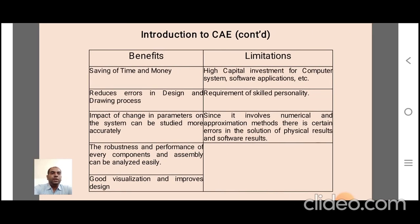Here are some benefits and limitations of Computer Aided Engineering. The first benefit is saving of time and money — with computers implemented, there is considerable time and money saving. The next benefit is reduction of errors in the design and drawing process. When drawing or designing any component, personal errors are introduced, and if that drawing goes to manufacturing, there will be considerable errors and mistakes. With computer implementation, we can reduce these errors in design and drawing.